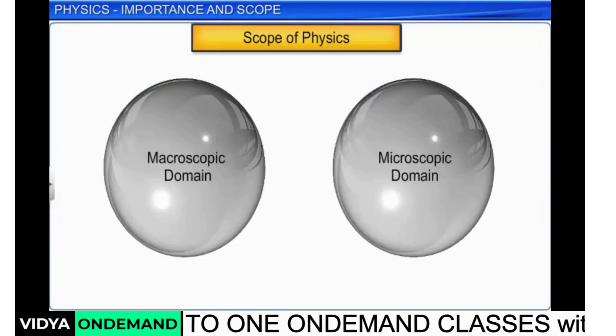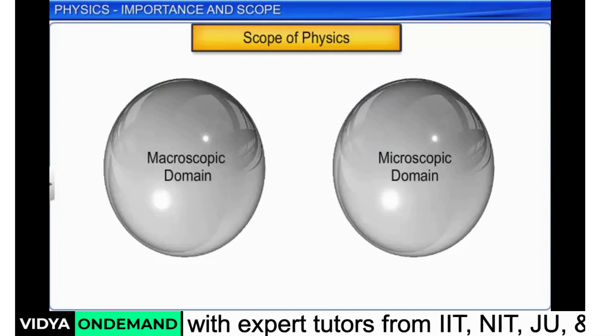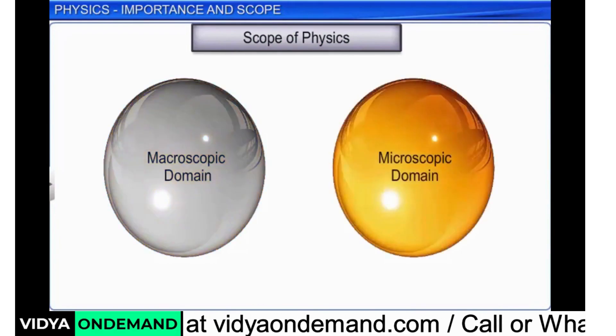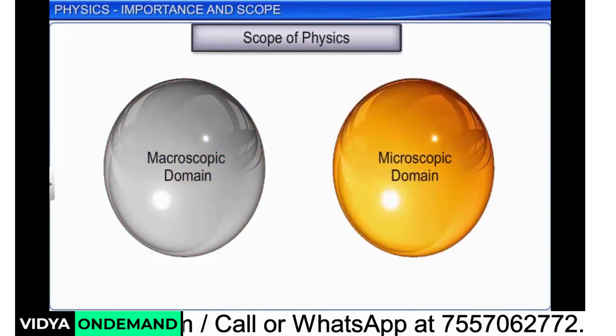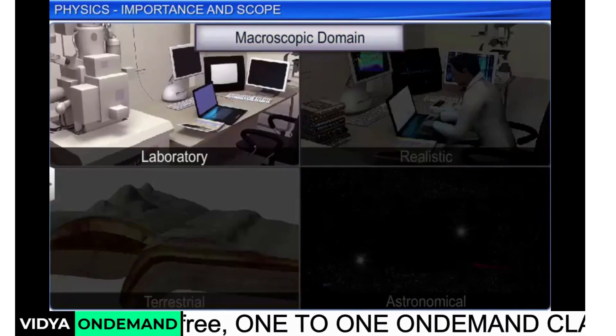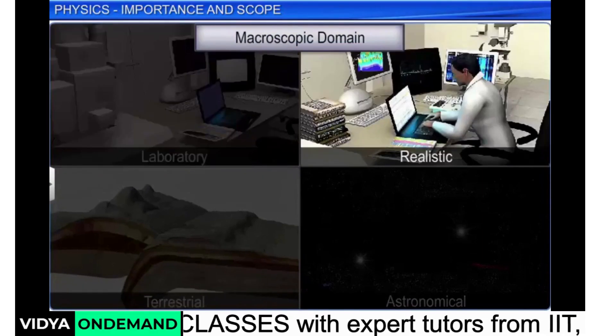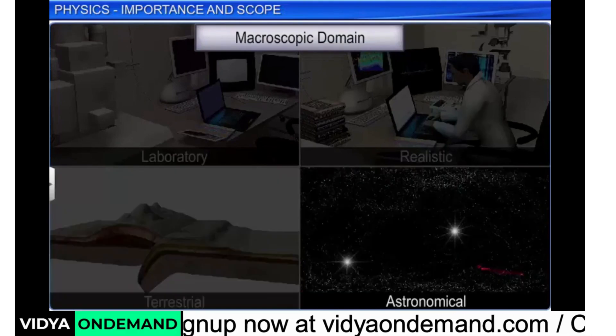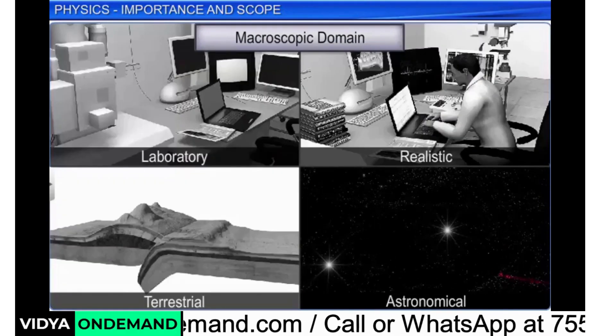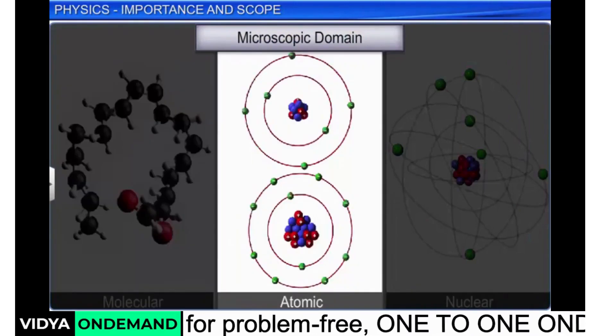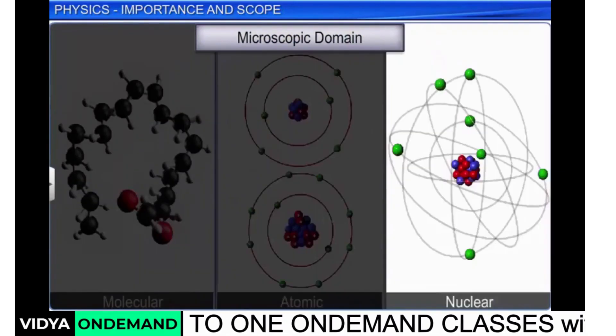The scope of physics can be divided into two major domains: macroscopic and microscopic. The macroscopic domain deals with phenomena at laboratory, realistic, terrestrial and astronomical scale, whereas the microscopic domain deals with molecular, atomic and nuclear phenomena.